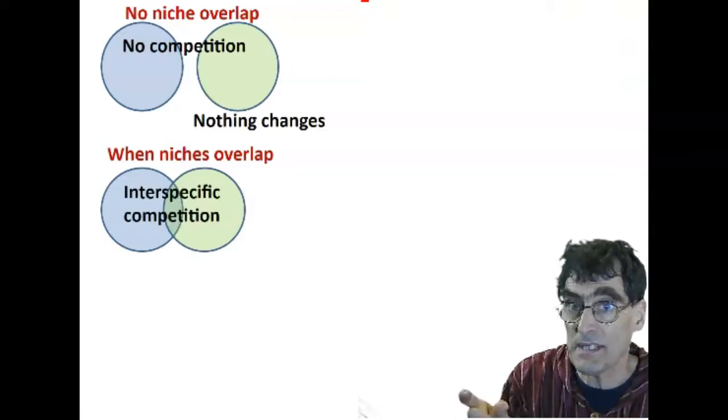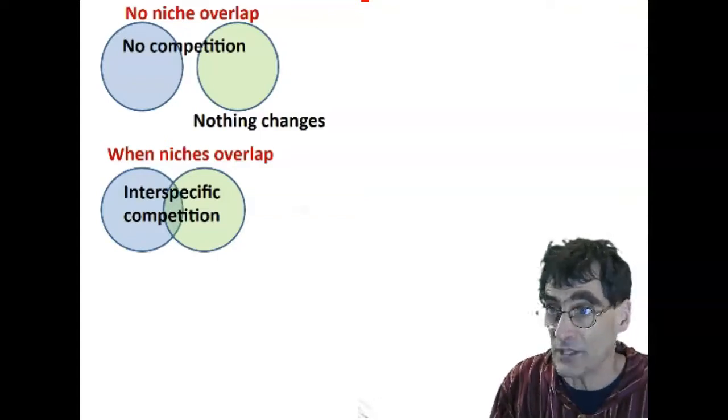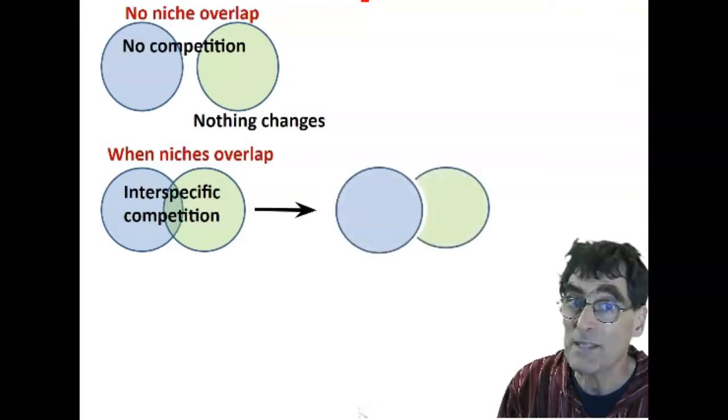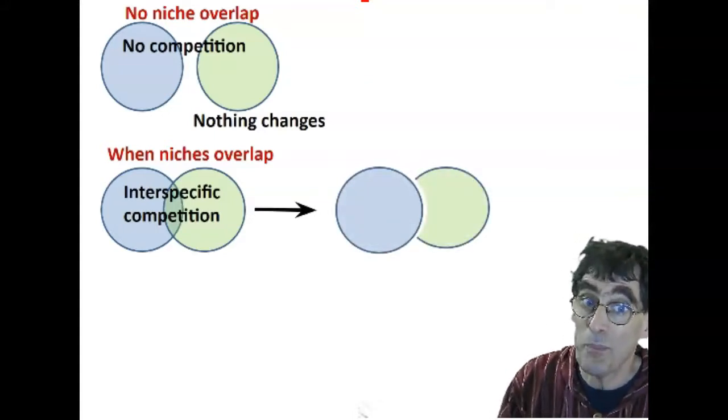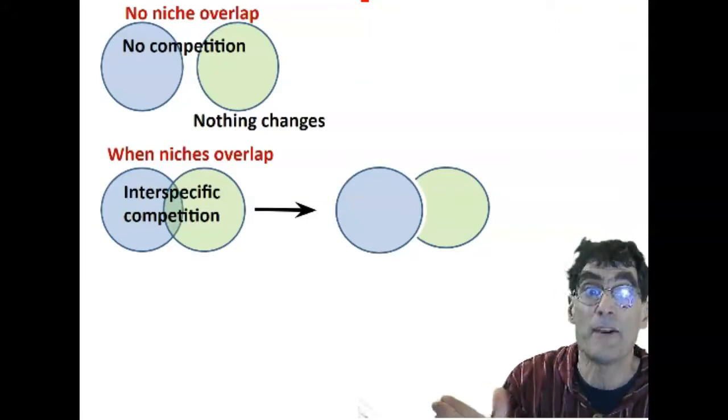So there's going to be interspecific competition. So now we're two species, two organisms of a different species are actually competing against each other. What that is going to end up looking like is that one species perhaps is just going to do better than the other species in that little region of niche overlap, and they're going to outcompete them.